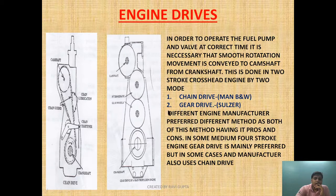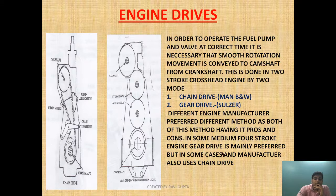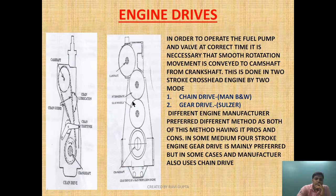This can be done in a two-stroke crosshead engine by two methods: chain drive and gear drive. The chain drive arrangement is preferred by MAN B&W, and the gear drive arrangement is preferred by Sulzer engines. In four-stroke engines, different manufacturers prefer different methods, but mostly gear drive is employed. Both methods have their pros and cons.